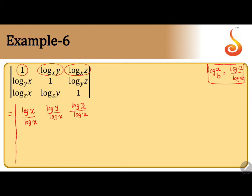Similarly, in the second row: log x to the base y is log x by log y. Taking the third element in the second row, log z to the base y, that is log z by log y. Since the denominators are log y, the middle element 1 is written as log y by log y.